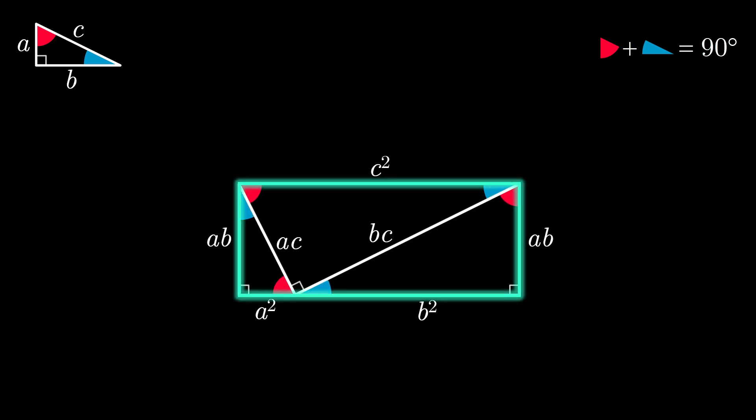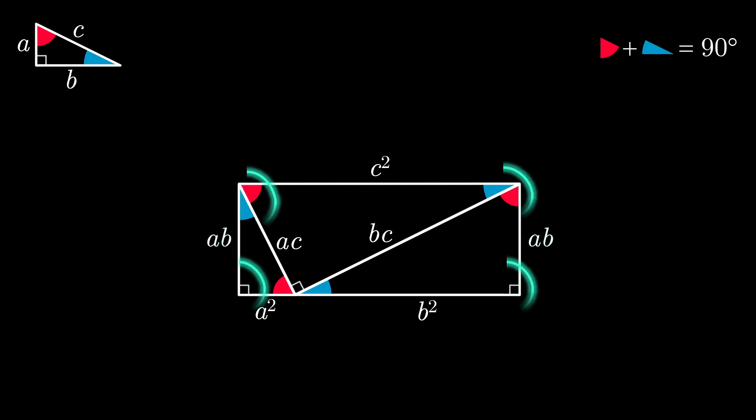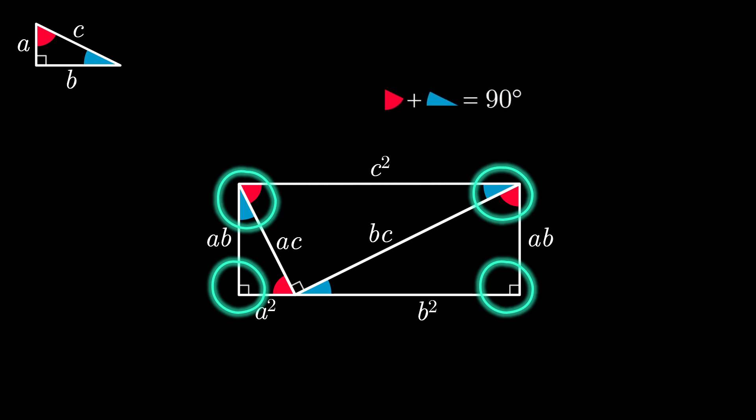We can confirm that this is indeed a rectangle by noting that we have a pair of opposite sides with equal length AB and a right angle at each of the four corners. Recall that the two acute angles in our triangles add to 90 degrees.